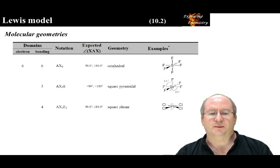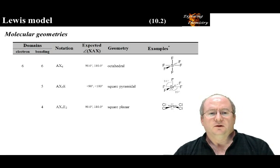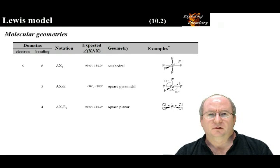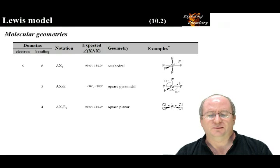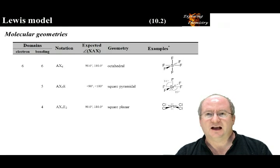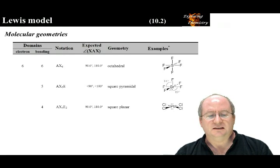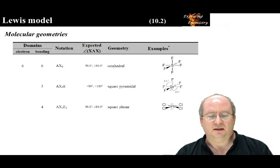With six electron domains, the parent geometry is octahedral. With one non-bonding domain, the geometry is called square pyramidal. With two non-bonding domains, the larger non-bonding domains go on opposite sides to be as far apart from each other as possible, and the geometry is called square planar — bond angles are exactly 90 degrees. There are no known entities containing six electron domains with more than two non-bonding domains.